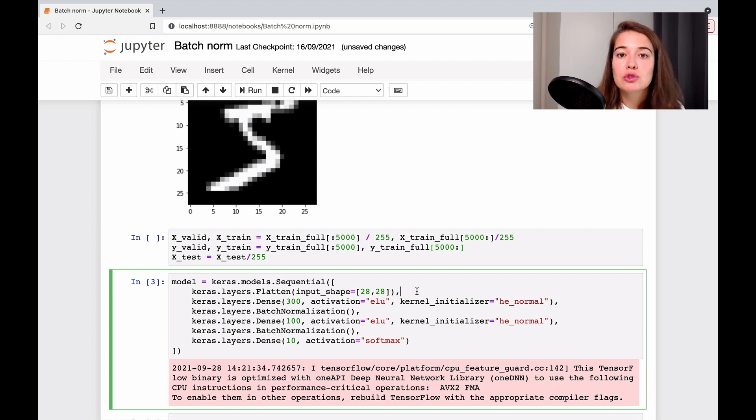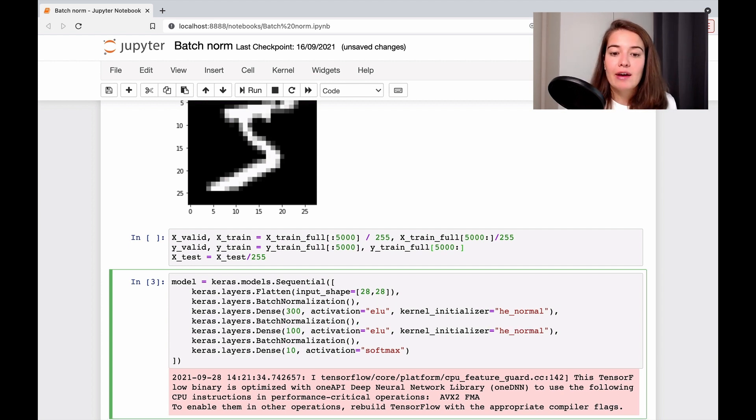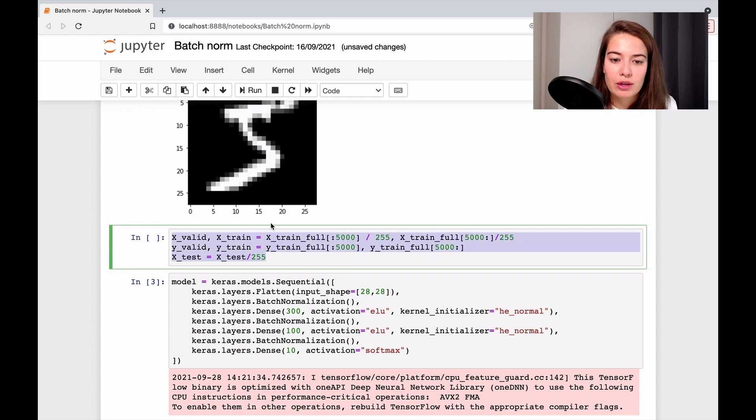But if you also want to process your inputs with the batch normalization layer, again, after flattening them, after changing this 28 by 28 matrix to a one long 784 element list, then you'll need to do batch normalization on top of it. And then it basically normalizes things for you. So you don't have to do it before here. So you would have to comment this out.